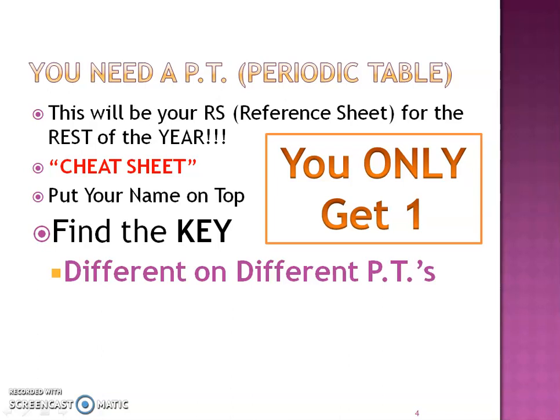First and foremost, you need a periodic table. Hopefully I've given you one already. This is going to be your reference sheet for the rest of the year — your cheat sheet. We're going to add some things to it. You only get one, so make sure your name gets on top just in case you leave it behind.